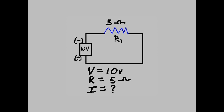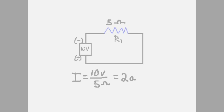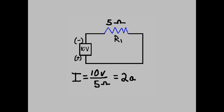New problem. Voltage equals 10 volts, R equals 5 ohms. Current equals what? I equals 10 volts over 5 ohms, which equals 10 over 5, that's 2. V over Ohm is Amps. 2A, 2 Amps. A is Amps.